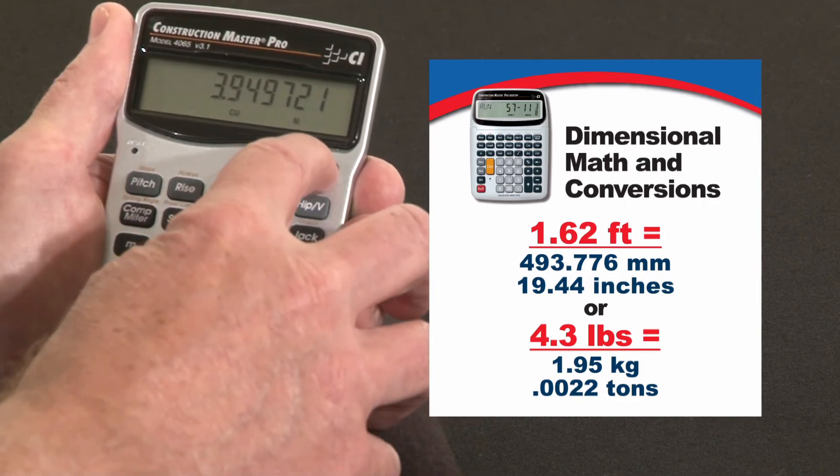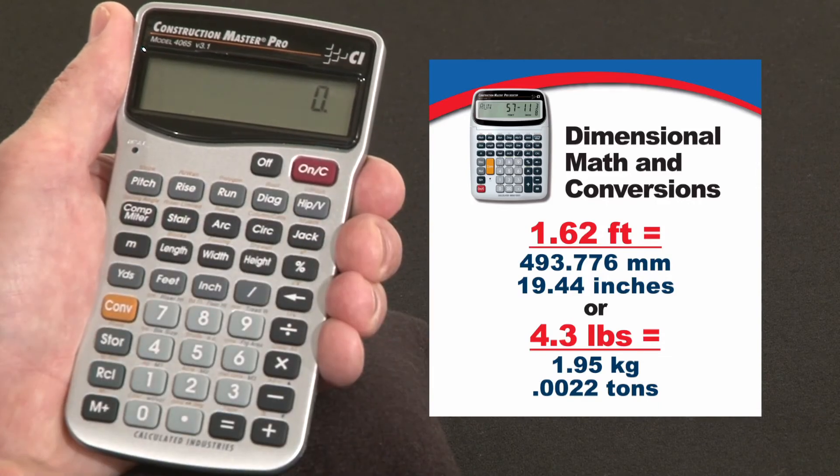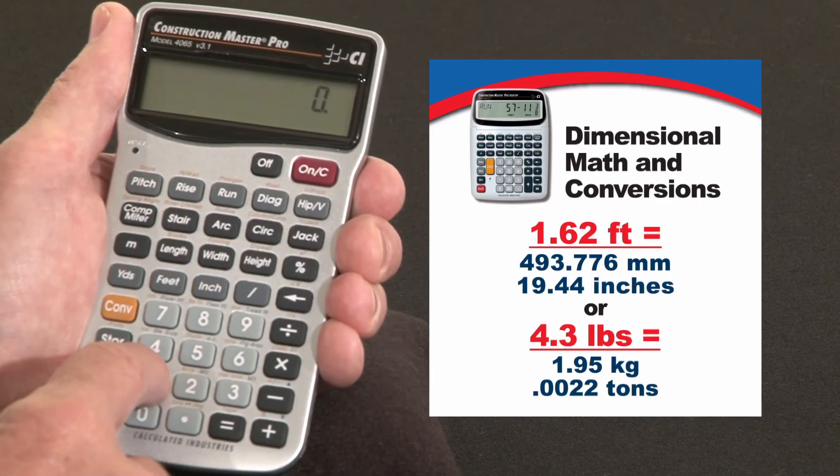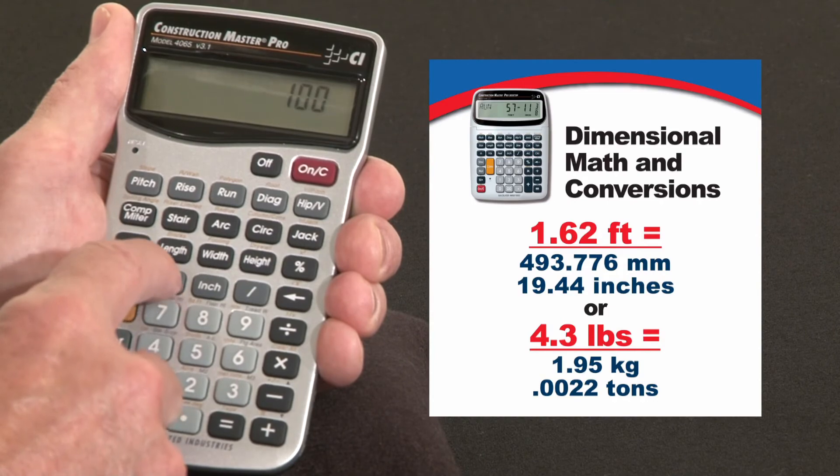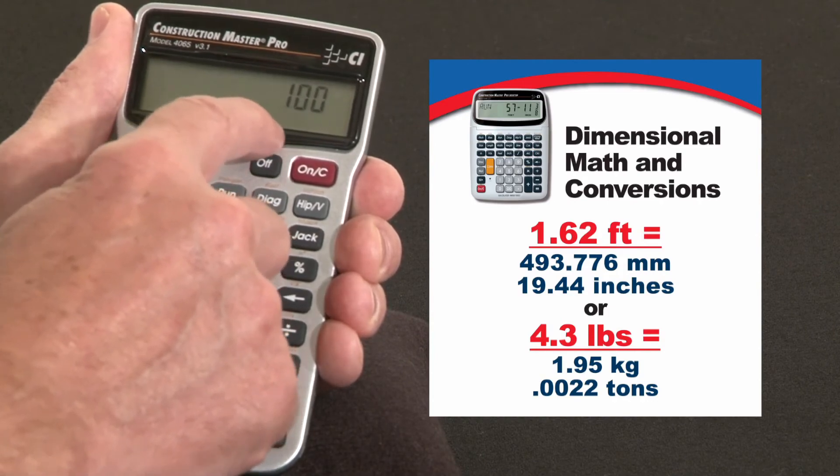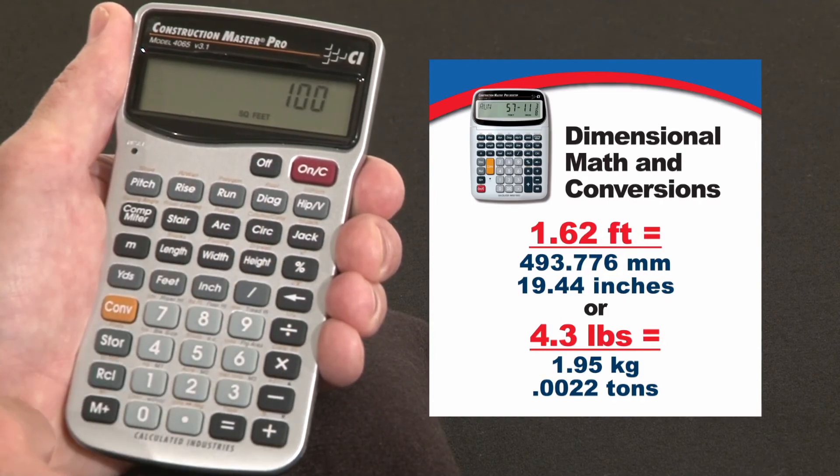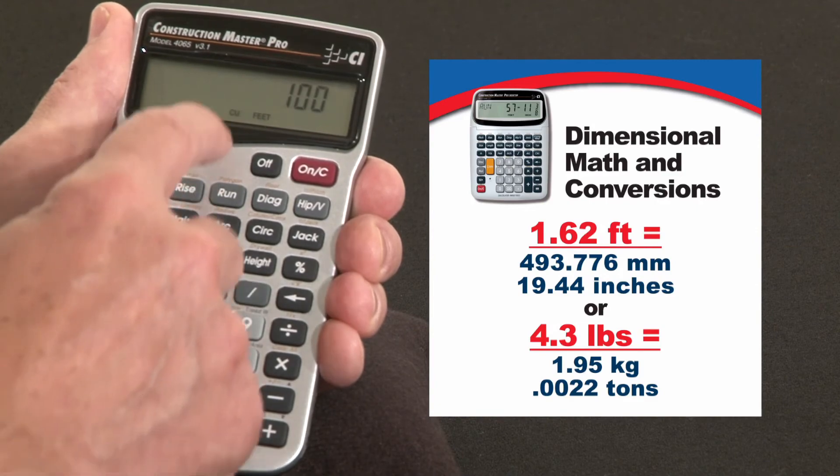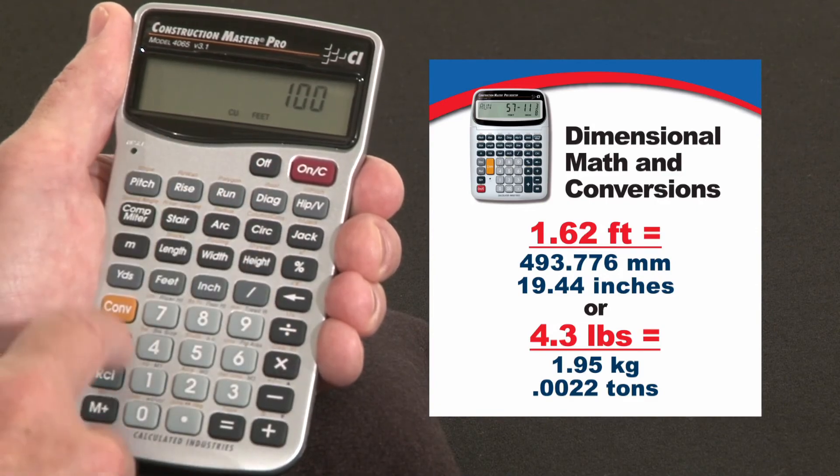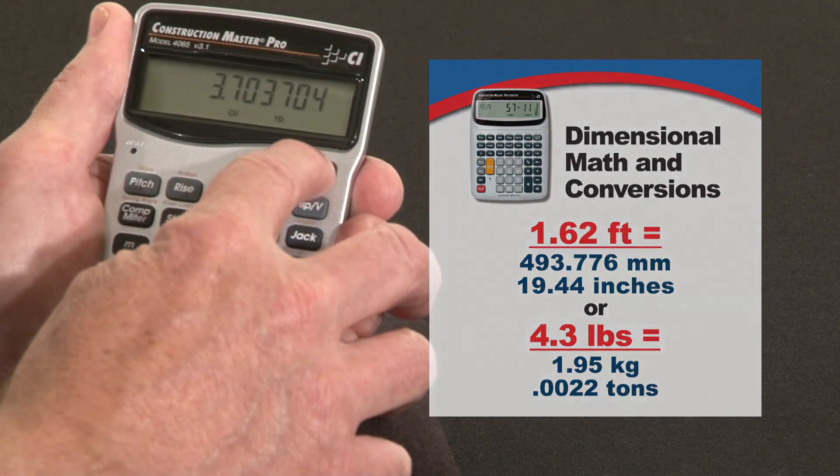Another way to work in square footage and volume is to enter it directly. If you already know the number, you don't have to multiply it. Let's say one hundred square feet. You would hit feet, feet. See it now says square feet. You can now start calculating with that. Or if you press it one more time it goes to cubic feet for cubic volume. And then you can convert that to yards or whatever else you want to do with that.